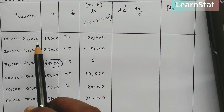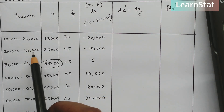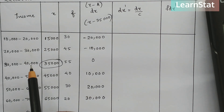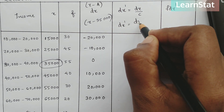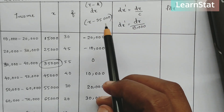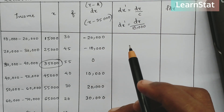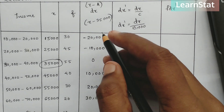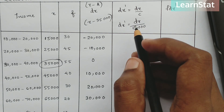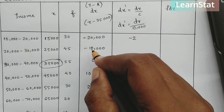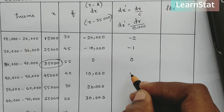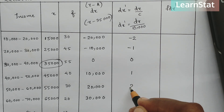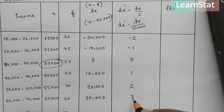The common difference between class intervals is 10,000, so C equals 10,000. We compute dx-dash as dx divided by C. So: minus 20,000 divided by 10,000 is minus 2; minus 10,000 divided by 10,000 is minus 1; 0 divided by 10,000 is 0; 10,000 divided by 10,000 is 1; 20,000 divided by 10,000 is 2; and 30,000 divided by 10,000 is 3.